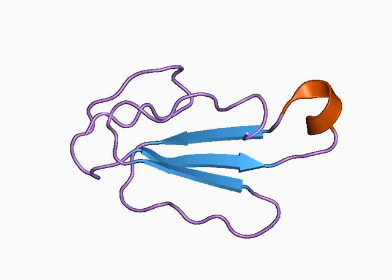Alpha-cobratoxin is a postsynaptic neurotoxin which reversibly blocks the nicotinic acetylcholine receptors. A bite of the Thailand cobra therefore leads to muscle paralysis. Because of that paralysis, respiratory problems may develop, which can lead to death.